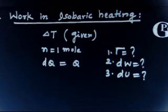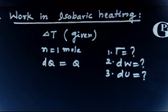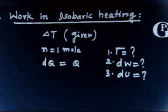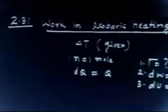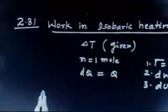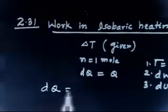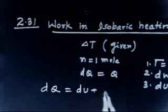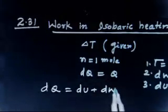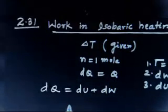You have been given: the heat given to the system is Q, and the temperature rise of the system is by delta T. So DU is easy. Let us apply the first law of thermodynamics: DQ equals DU plus DW. And once again, the process is isobaric.